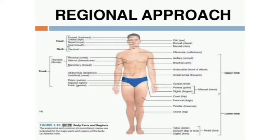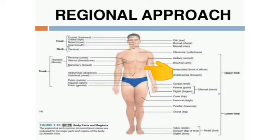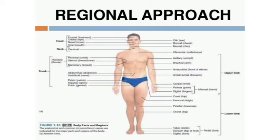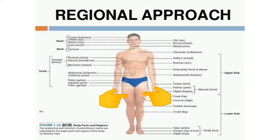The human body can be said to be made up of four major regions. The first region is the head. The second is the neck. The third is the trunk. And the fourth is the limbs. The trunk can further be subdivided into the thorax, the abdomen, the pelvis or perineum, and the back. The limbs consist of a pair of upper limbs and a pair of lower limbs.